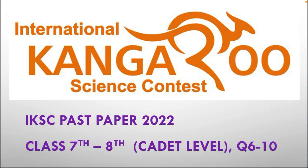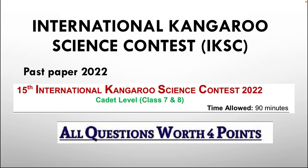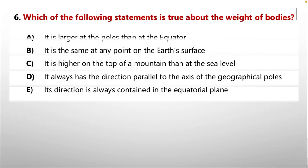This video contains IKSC International Ganglion Science Contest paper of year 2022 for carrier level class 7 and 8. It has solutions from question number 6 to 10. All questions consist of equal points, that is 4 points each.